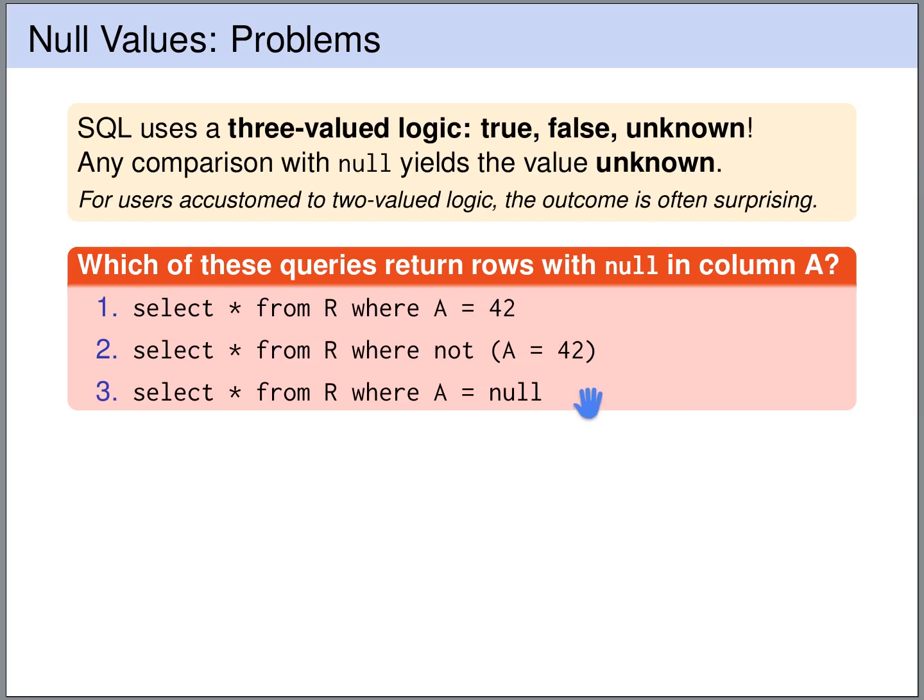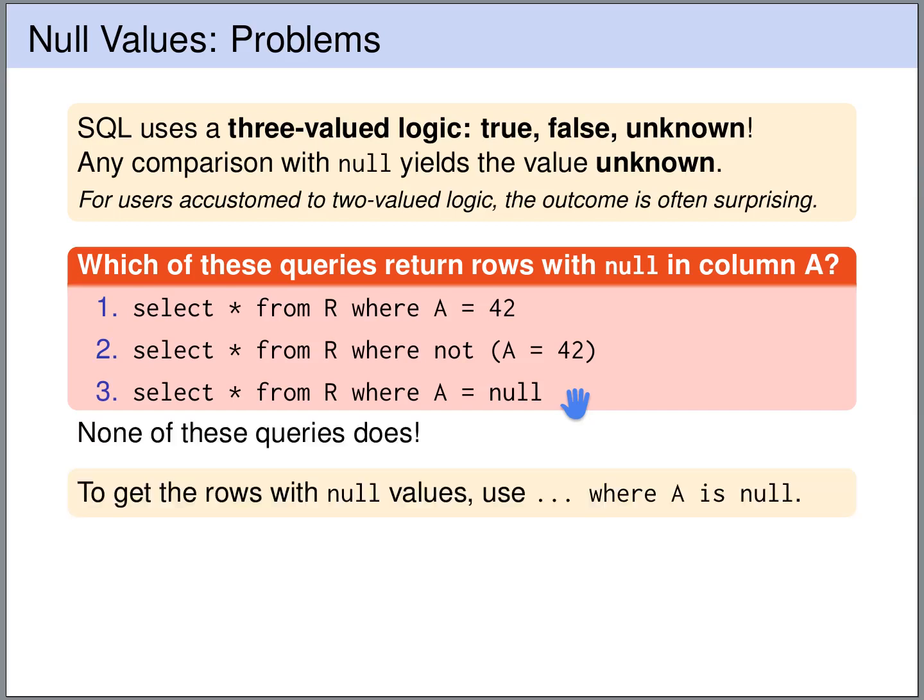And the third query directly asks for all the rows of R where A is equal to NULL. But again, any comparison involving NULL will result in UNKNOWN. So even NULL is equal to NULL results in UNKNOWN. So these rows will not be returned even by the third query. So somewhat surprisingly, none of these queries returns the rows where A is NULL.